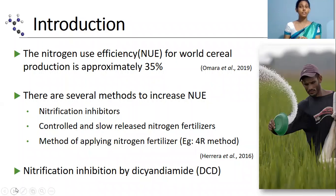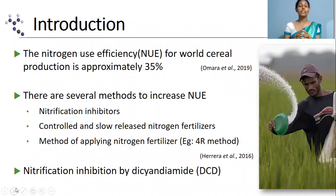Out of these, use of nitrification inhibitors is widely used in the world. Out of the commercially available nitrification inhibitors, DCD or dicyandiamide is widely used by farmers worldwide.